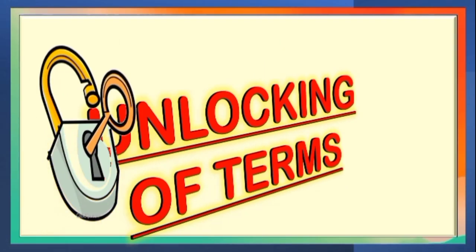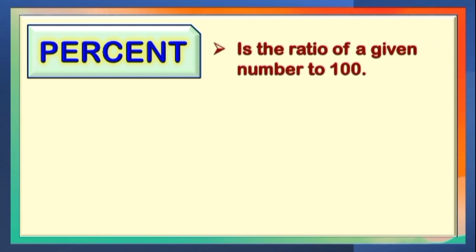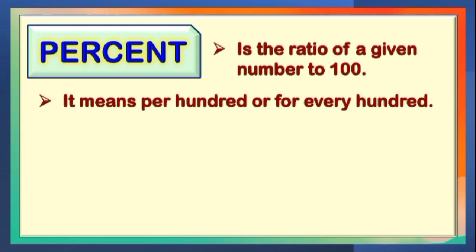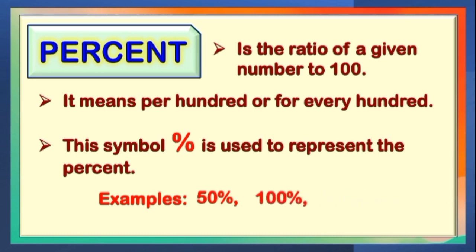To start our online discussion, let us unlock the different terminologies that you will encounter along the way. Percent is the ratio of a given number to 100. It means per 100 or for every 100. This symbol is used to represent the percent. Examples: 50%, 100%, 75%, and so on.